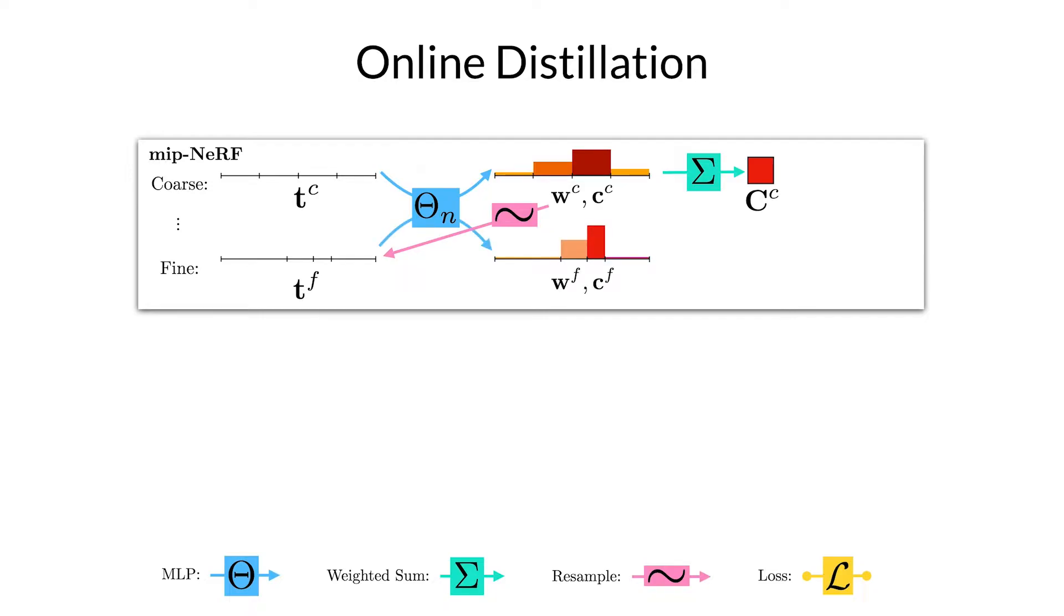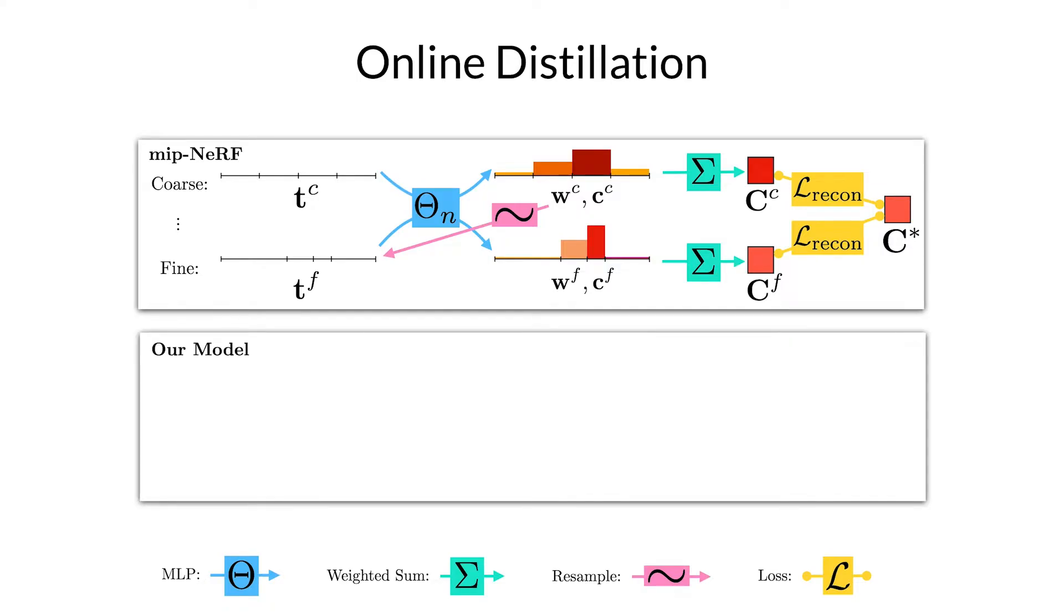Those intervals are pushed through the MLP to get a set of weights and colors and those are used to produce the color of the pixel. MIPNERF is optimized by just minimizing our reconstruction loss between all rendered pixel values and the true pixel color taken from the input images. Only the fine color is used to render the final image which shows how wasteful this process is. The only reason the coarse rendering is supervised at all is to help guide the sampling of the fine histogram. This observation motivated our model's training and sampling procedure.